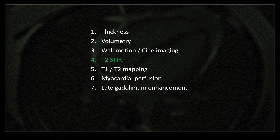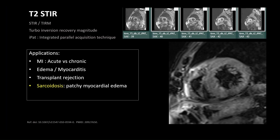Now coming to T2 STIR images. Just like any other part of the body, STIR is mainly used to look for edema. In cardiac MRI, STIR images appear as TIRM or black blood imaging. Applications include differentiating acute versus chronic MI, looking for myocarditis, transplant rejection, and in sarcoidosis there can be patchy myocardial edema.